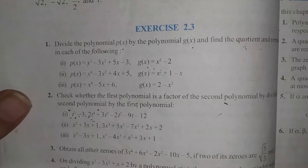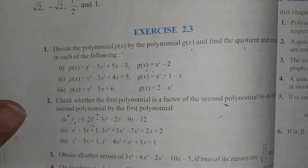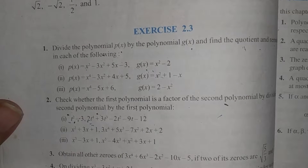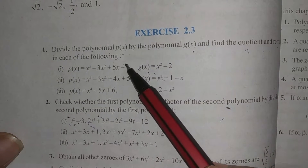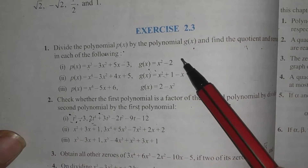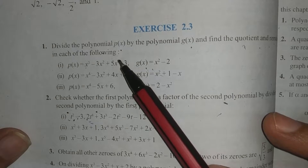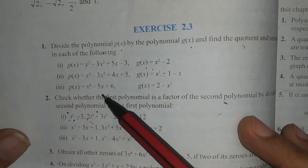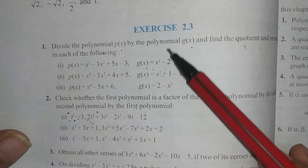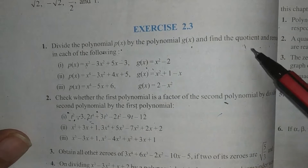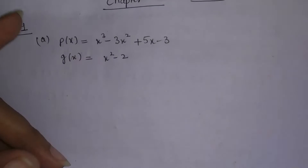Hello everyone, today we will do chapter number 2, exercise 2.3, question number 1. Let's read the statement: Divide the polynomial Px by the polynomial Gx and find the quotient and remainder in each of the following cases. We have three parts given in this question. Px and Gx are polynomials given. We will divide both and find the quotient and remainder values. Let's start the question.